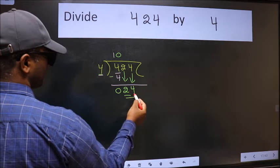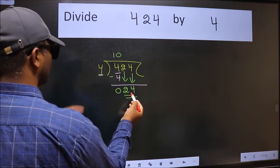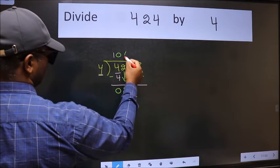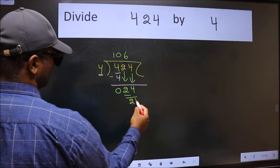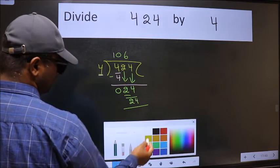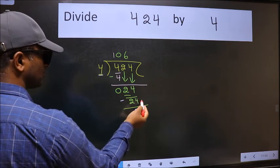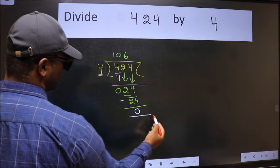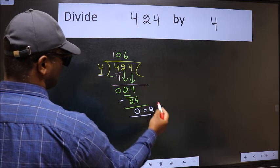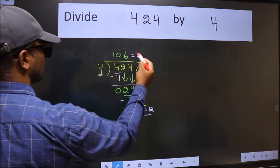Now 24. When do we get 24 in the 4 table? 4 times 6 is 24. Now we subtract and get 0. No more numbers to bring down, so we stop here. This is our remainder and this is our quotient.